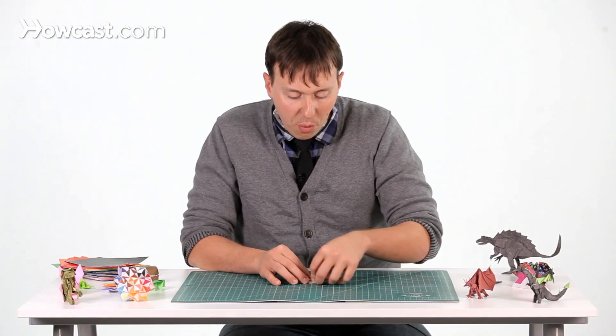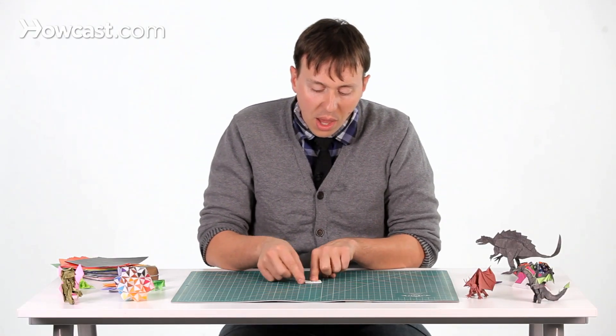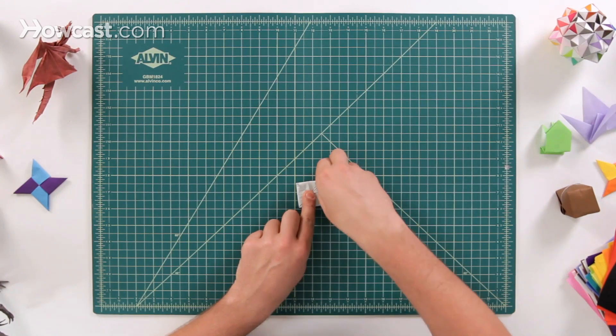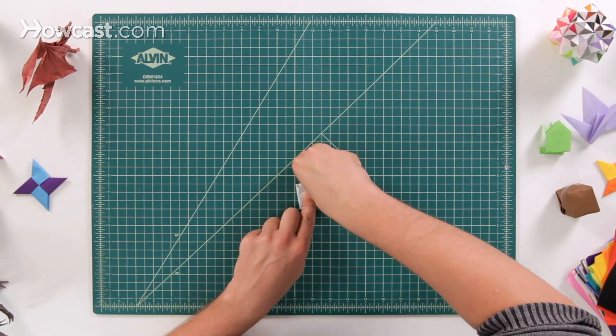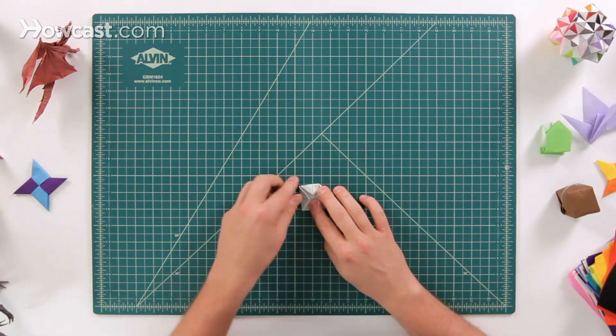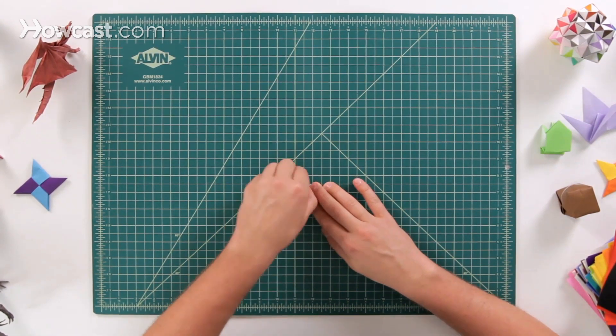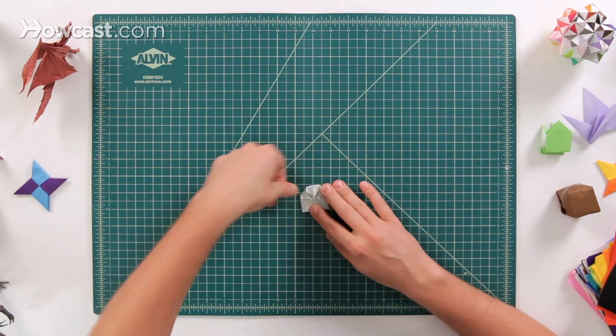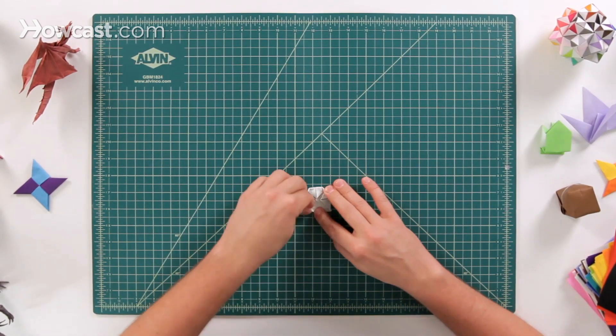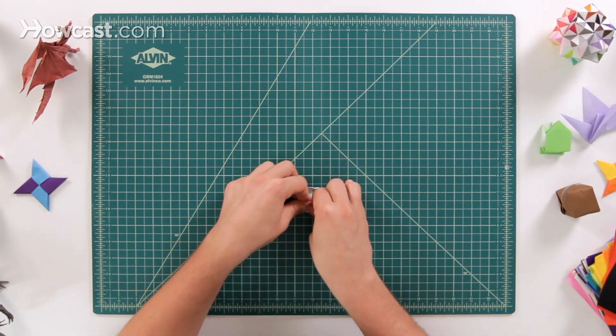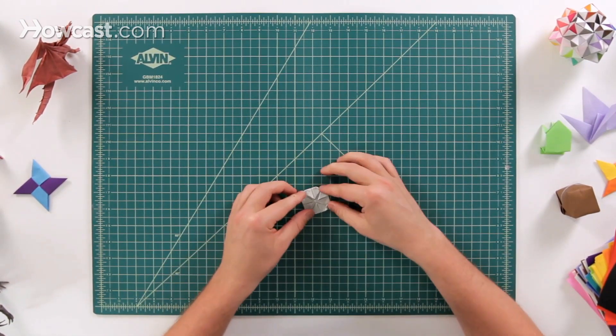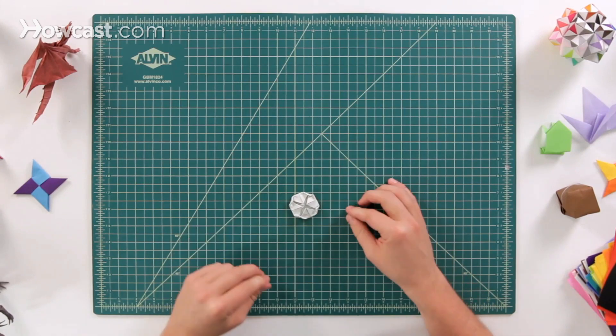So after we've done the fourth blintz base, we've folded those all up, we're going to fold one corner, and this is the hardest step here. It really doesn't want to do it. Just fold one corner down about halfway. This is not going all the way into the middle. This is just coming down just about that far. And the paper is not going to be too happy about it. But this will still work. Just like that.